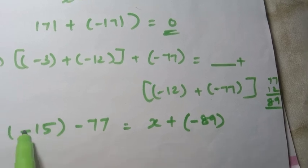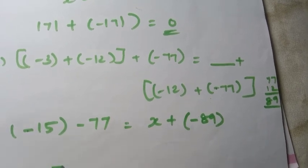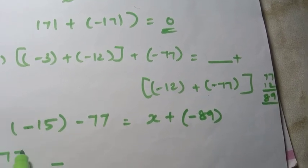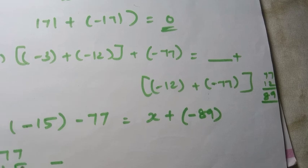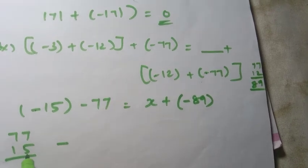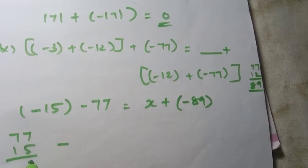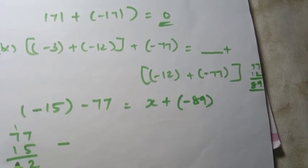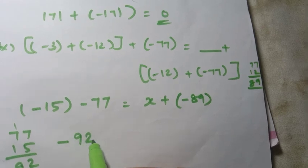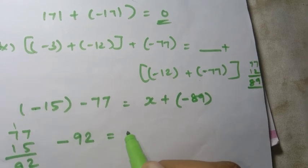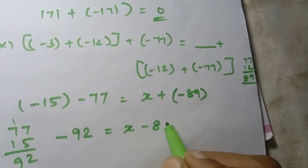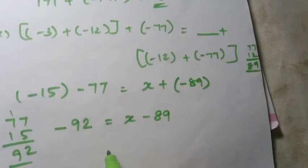This is minus, minus, minus. Same sign, so add. 77 and 15: add to get 92. So minus 92 equals x minus 89.